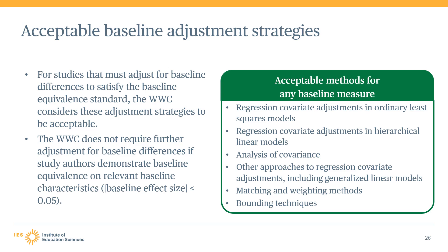The table shown on this slide lists the statistical adjustment strategies that the WWC considers appropriate for any baseline measure. These include regression covariate adjustments in ordinary least squares models, regression covariate adjustments in hierarchical linear models, analysis of covariance, other approaches to regression covariance such as generalized linear models, matching and weighting methods, and bounding techniques.